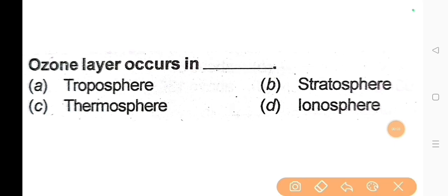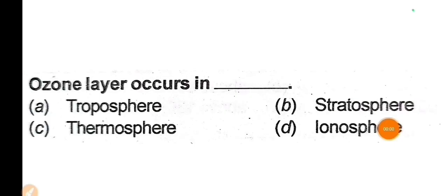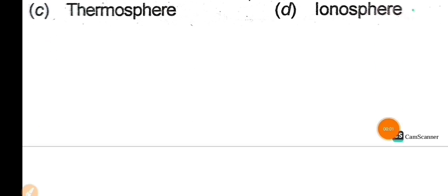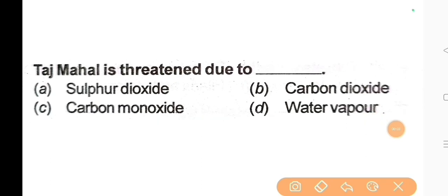Next question: The ozone layer occurs in? The correct answer is Option B: Stratosphere. Next question: The Taj Mahal is being damaged due to? The correct answer is Option A: Sulphur dioxide.